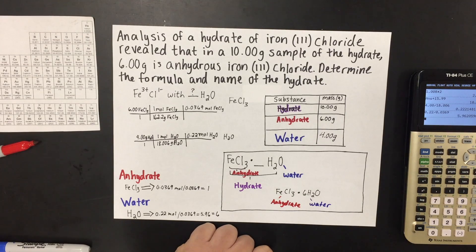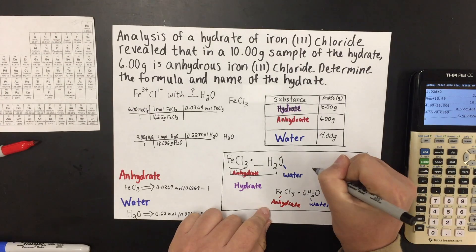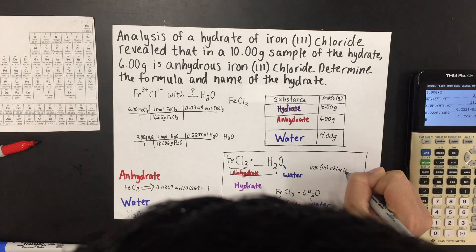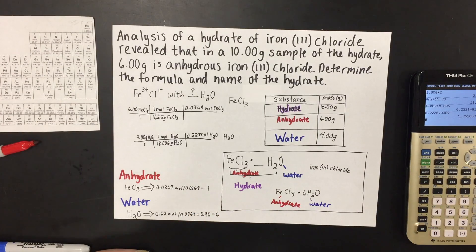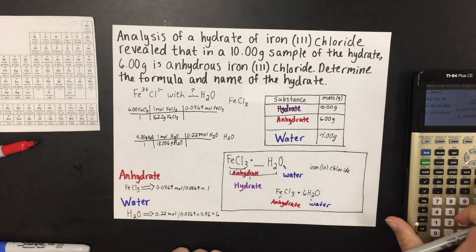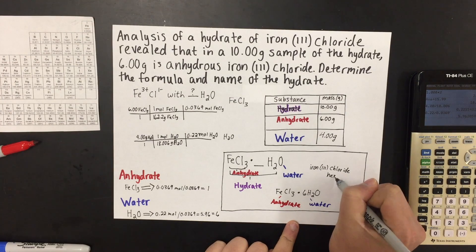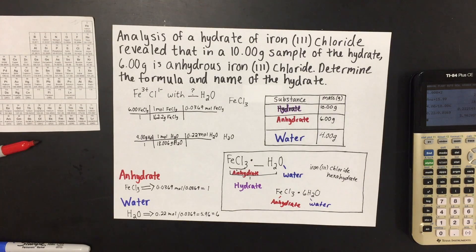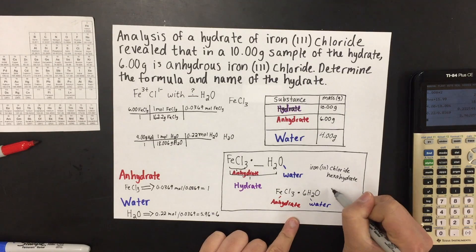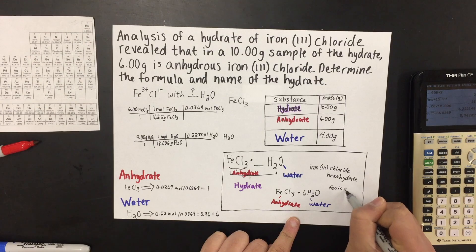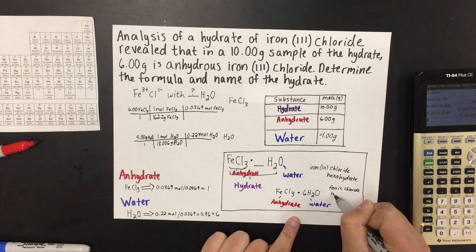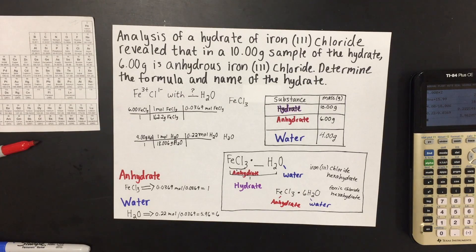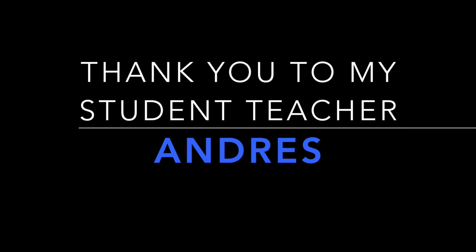The name of this hydrate would be iron(III) chloride hexahydrate — hexa meaning 6 and hydrate meaning water. The alternative way to write this name would be ferric chloride hexahydrate. Thanks to Andres for teaching us how to calculate the empirical formula of a hydrate.